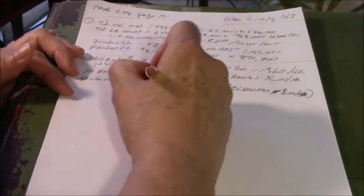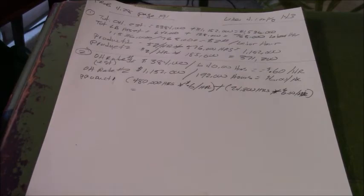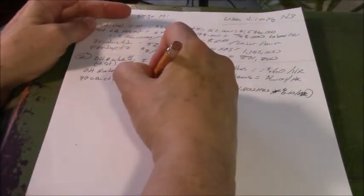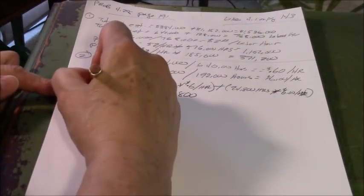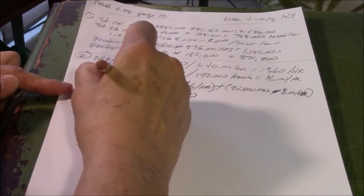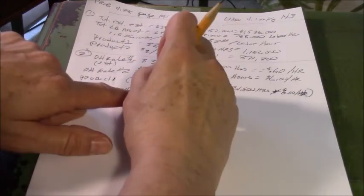And that equals 436,800. So that's product one overhead. 436,008.